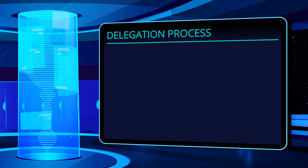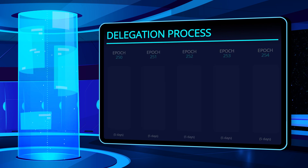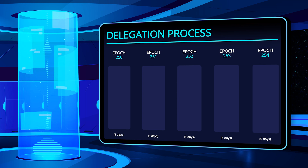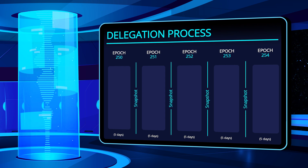But how does the delegation process work? We have worked out the following example for you. The cycle is divided into epochs of 5 days each, with a so-called snapshot taking place between each epoch change, which is executed as a virtual image of the system state as a backup.